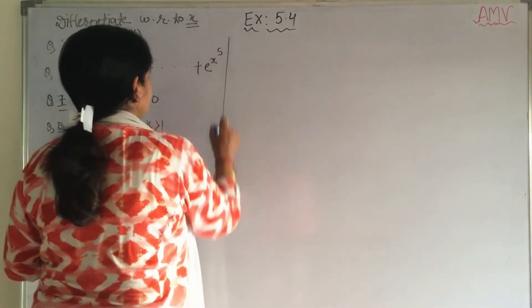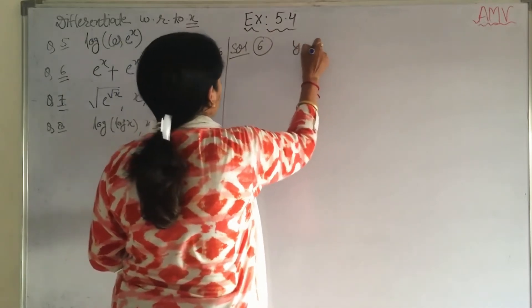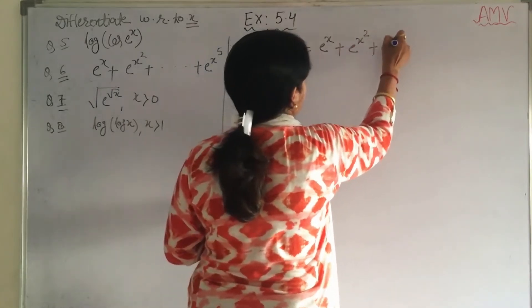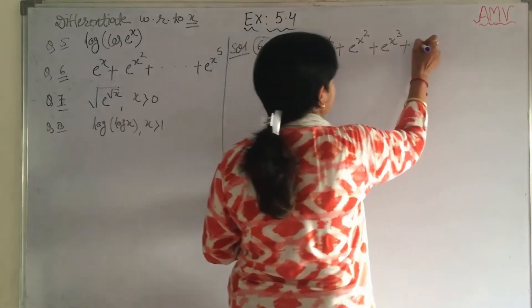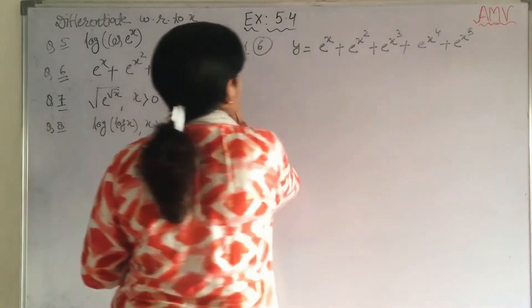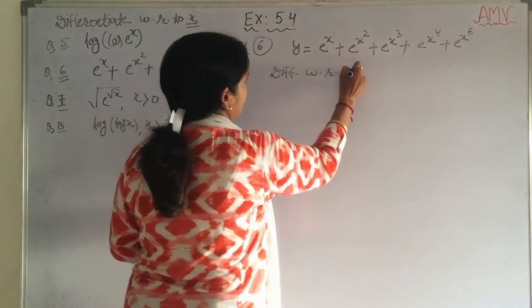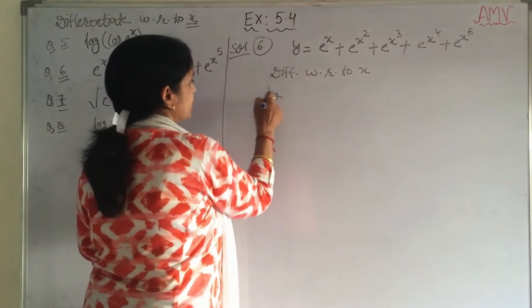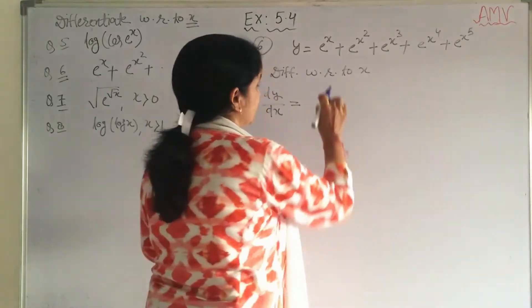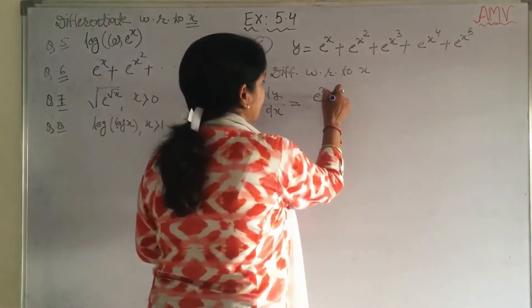Question number 6: let y = e^x + e^(x²) + e^(x³) + e^(x⁴) + e^(x⁵). Differentiating with respect to x, y becomes dy/dx.